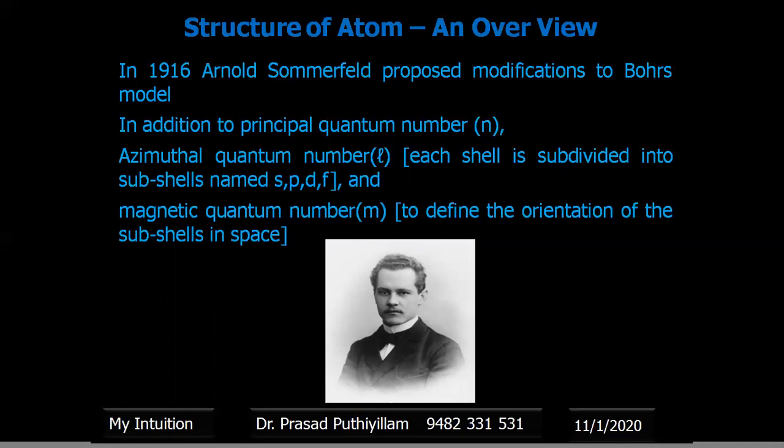Arnold Sommerfeld was nominated for a Nobel Prize more than 48 times, but he was never selected. Almost all of his students, however, were selected for the Nobel Prize, and they continued to build on his work.